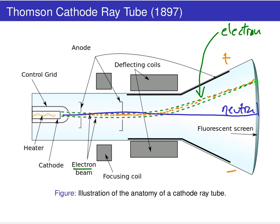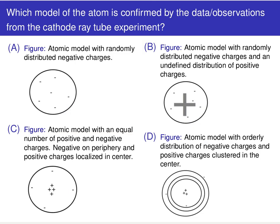To help you think through this: we start off with neutral matter, heat it up, break it apart, and pull out negatively charged particles. Use this to build up an initial model of the atom.